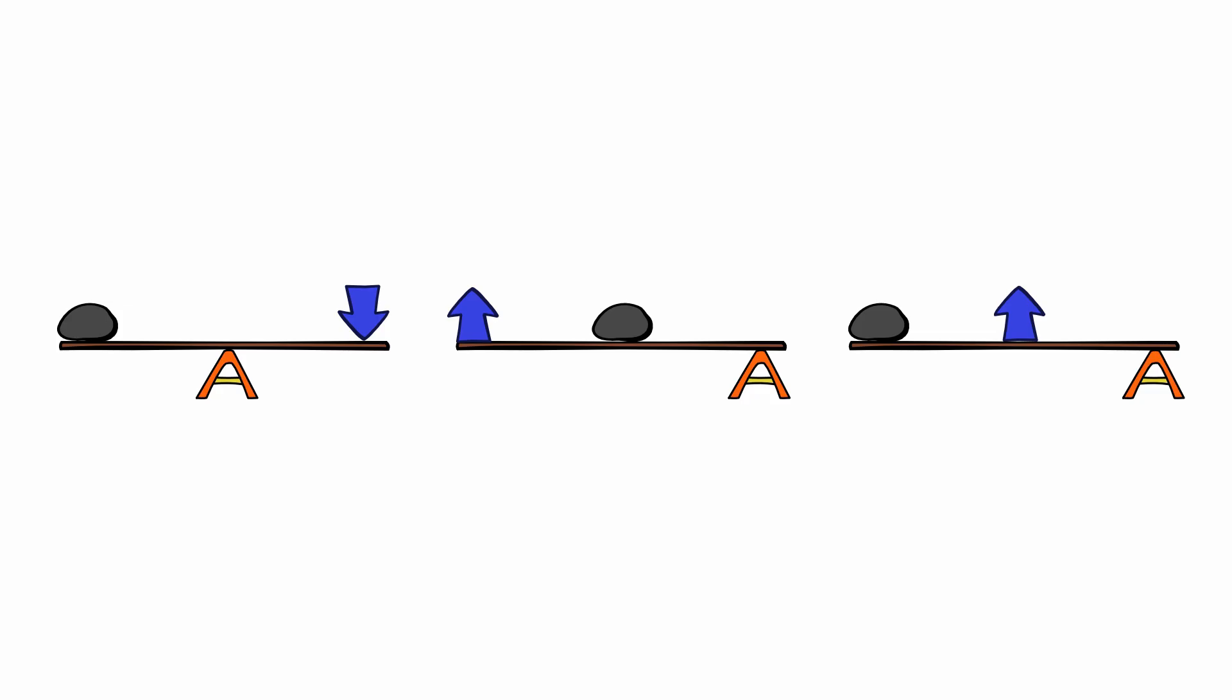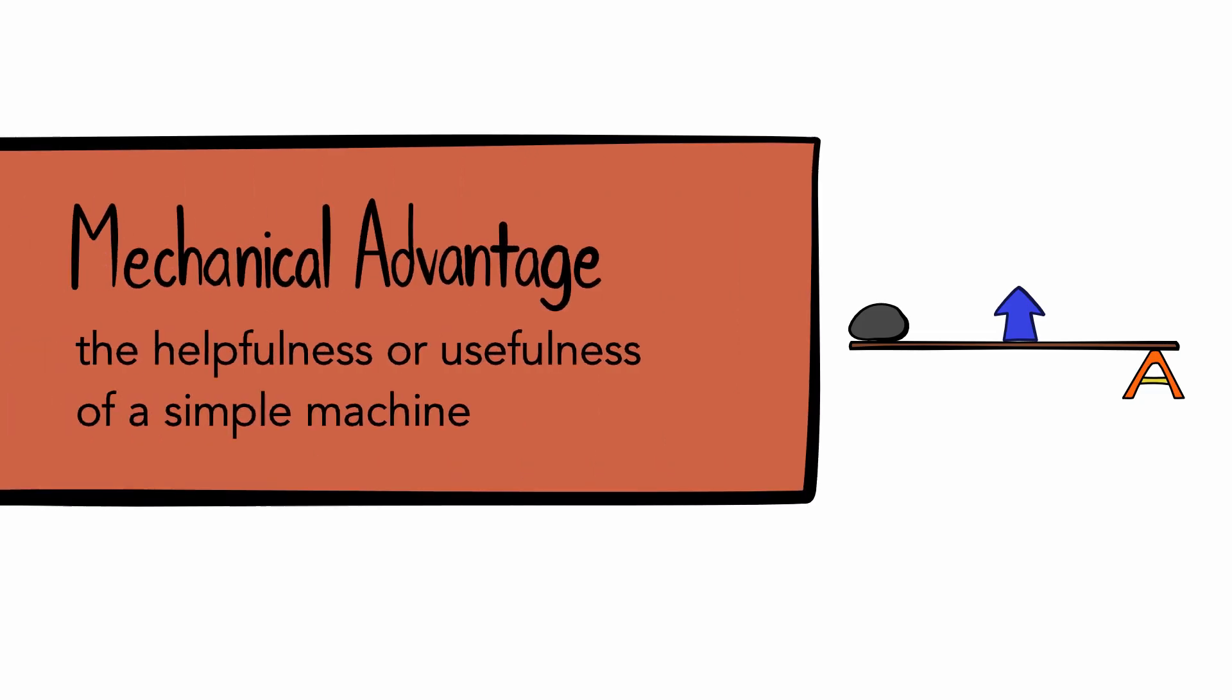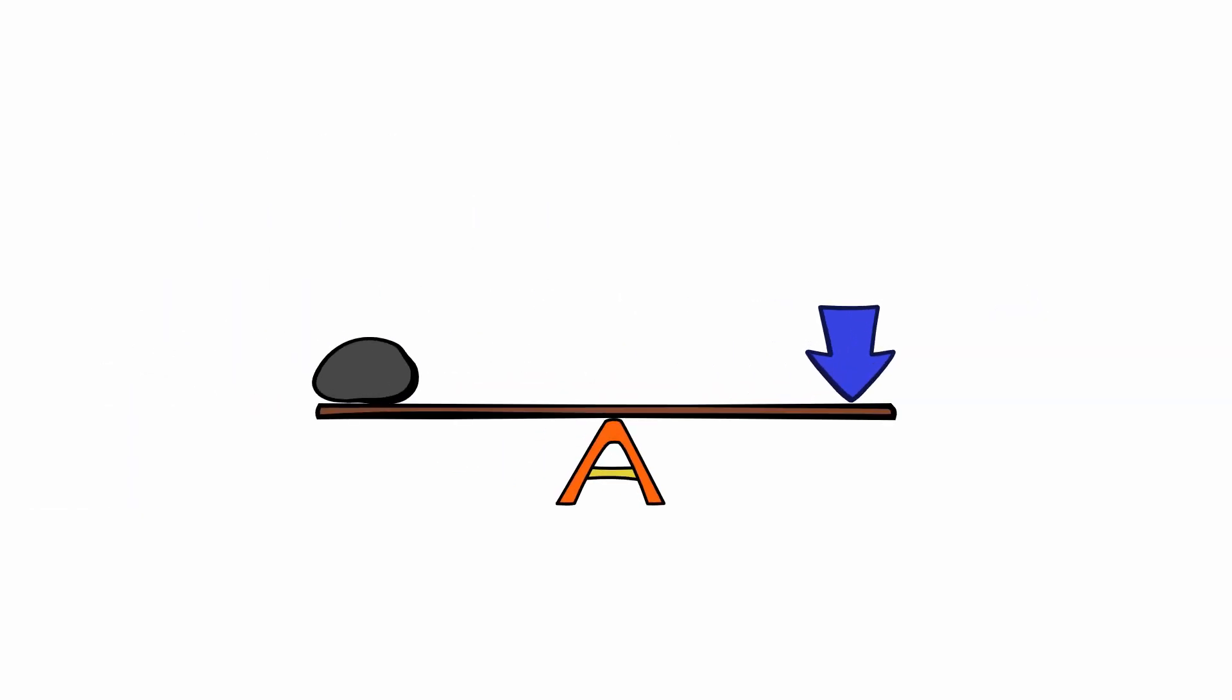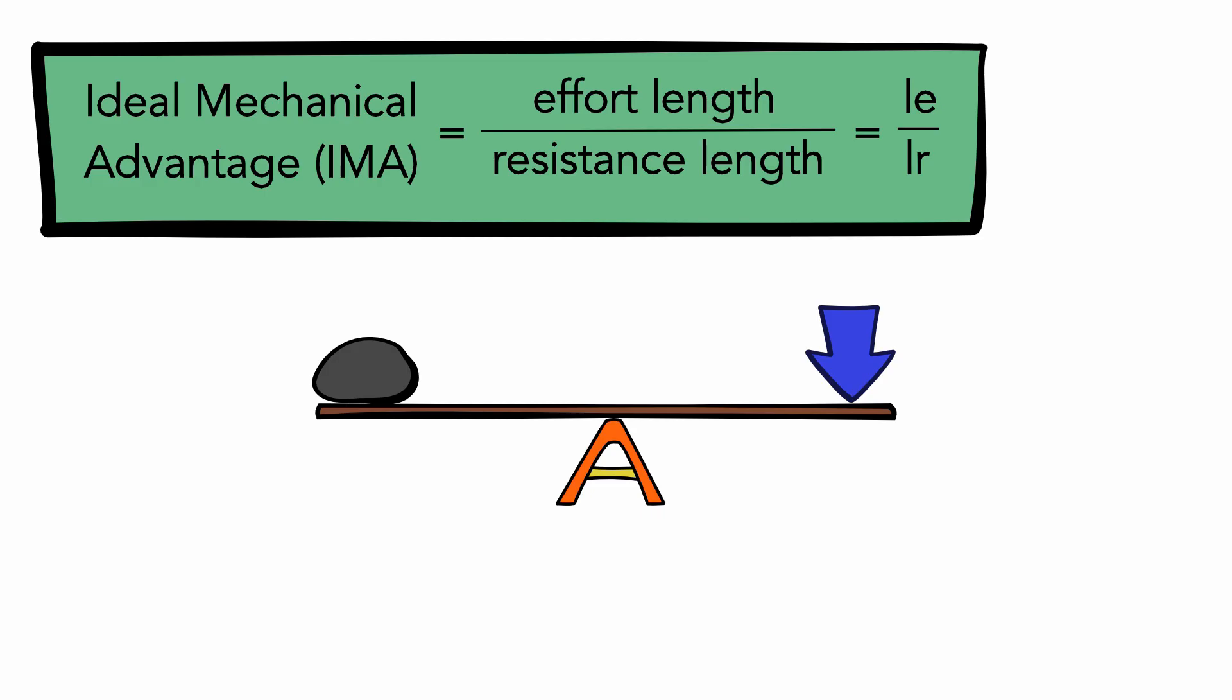Each of the different classes of levers have their benefits and trade-offs. The helpfulness or usefulness of a simple machine is called its mechanical advantage. A lever's ideal mechanical advantage, which neglects things like friction, is a numerical value that we calculate using the formula LE over LR, or effort length over the resistance length.